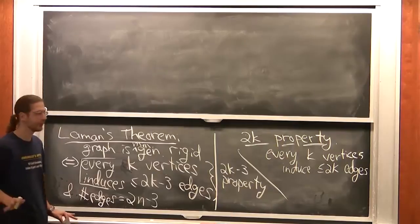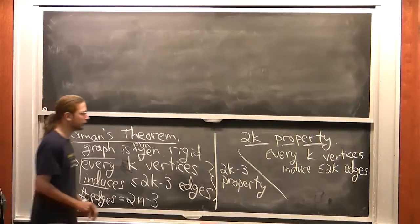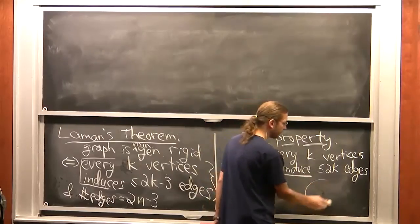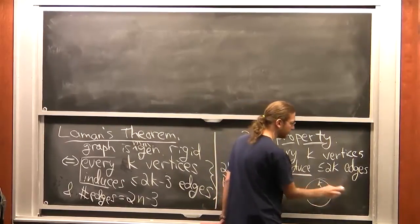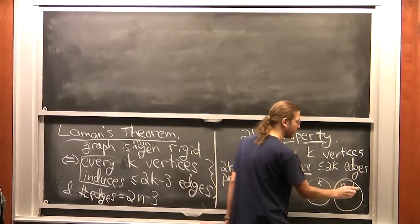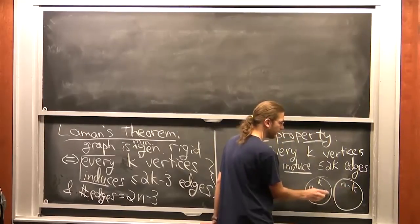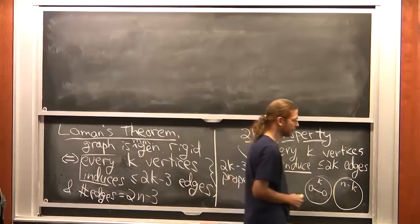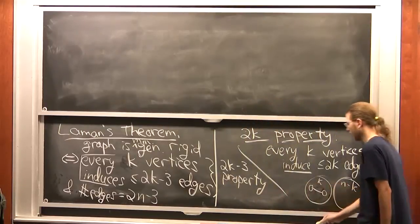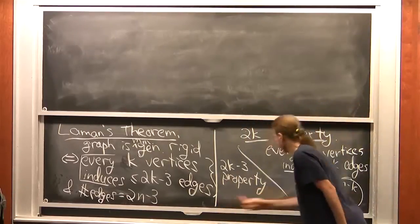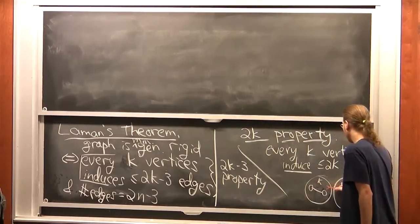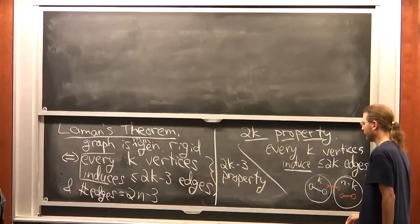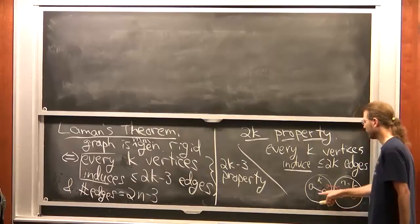The 2k property means every k vertices induce at most 2k edges. To clarify 'inducing': given a set of k vertices, you only count edges where both endpoints are in the set. You ignore edges with one endpoint inside and one outside, and obviously edges entirely outside.